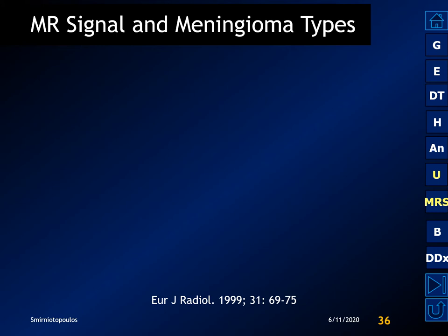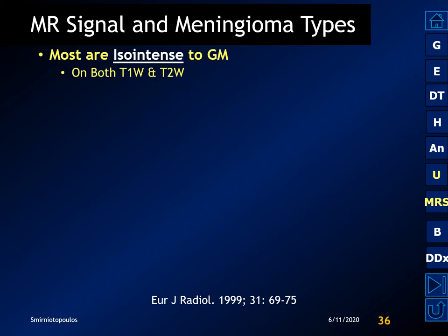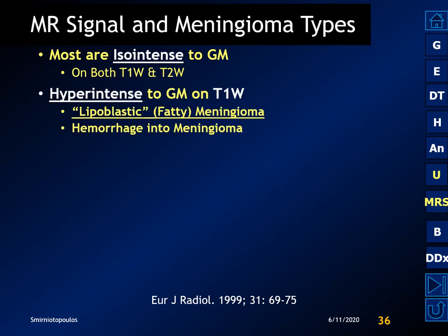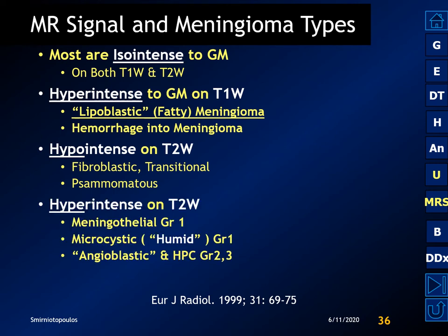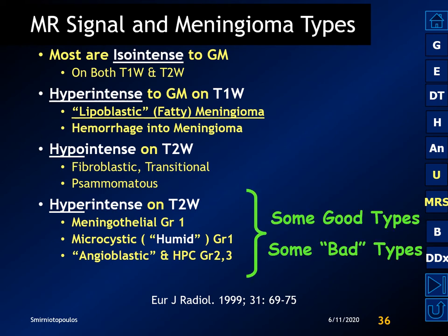There have been lots of efforts to correlate MR signal intensity with the subtypes of meningioma. Most are isointense to gray matter on both T1 and T2. Lipoblastic or fatty meningiomas and hemorrhage into meningioma can be bright on T1. Hypointense on T2 are the densely fibrous meningiomas. Hyperintense on T2 includes the ordinary meningioma, the microcystic or humid meningioma, and the more aggressive angioblastic meningiomas and hemangiopericytomas.